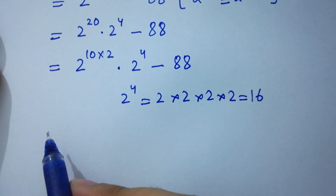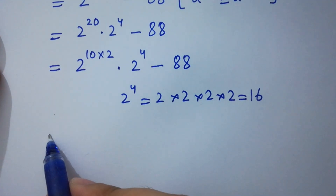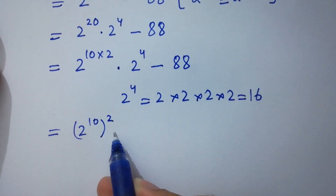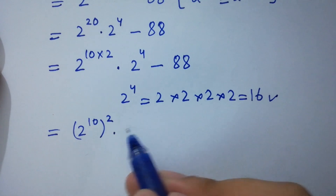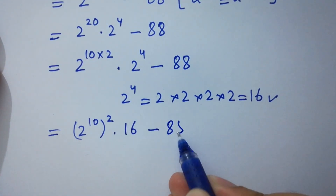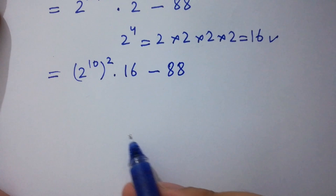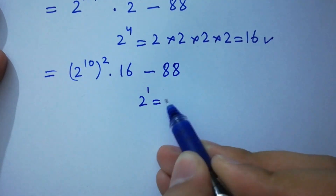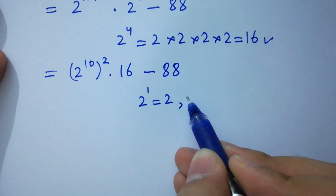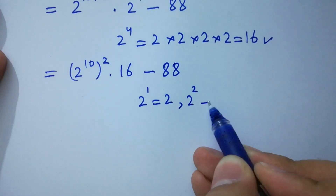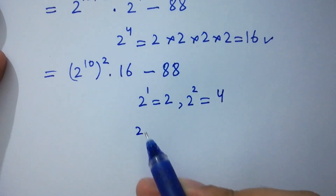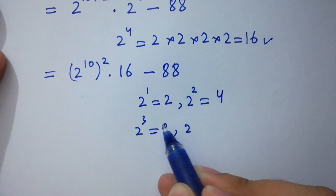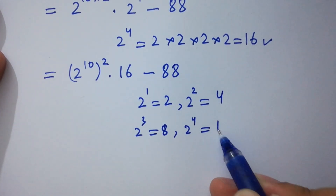So here we have (2¹⁰)² times 2⁴, which is 16, minus 88. We need to find 2 to the power 10. Since 2⁴ equals 8 times 2, which is 16.